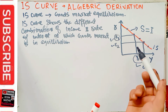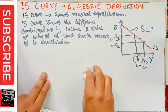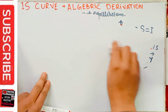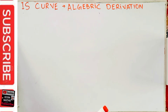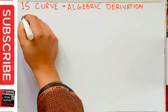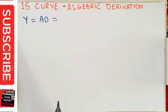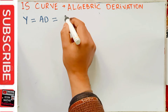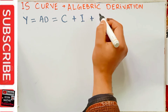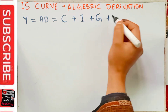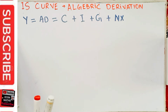Now to derive the IS curve algebraically, we need the aggregate demand model or income expenditure model. We know that Y, total income, is equal to aggregate demand. We will take the four-sector model: Y is equal to consumption expenditure plus investment expenditure plus government spending plus net exports.